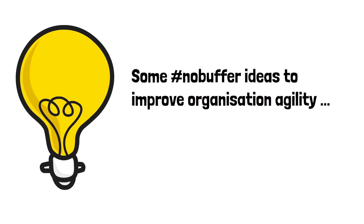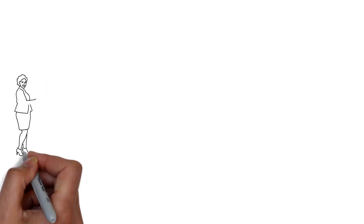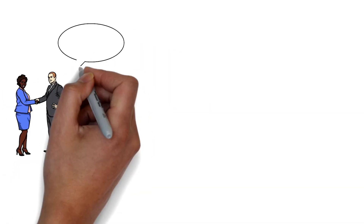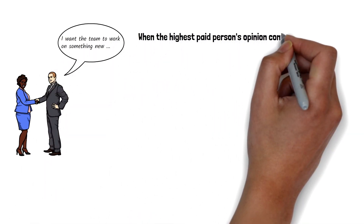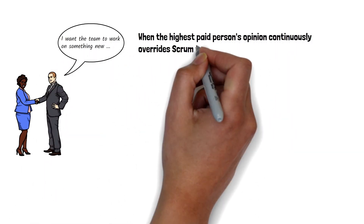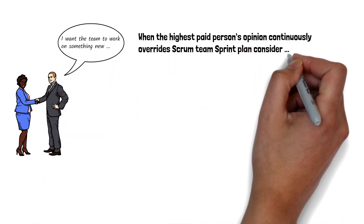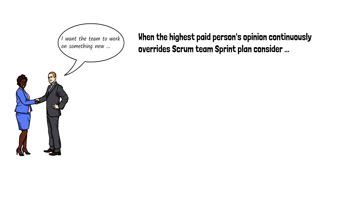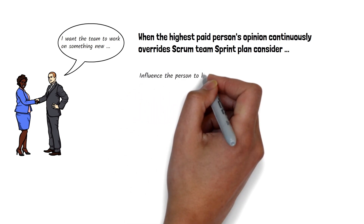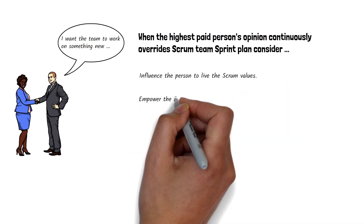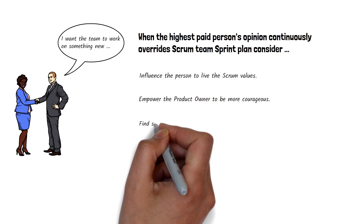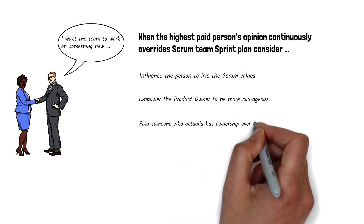Rather than adding buffers that cover up problems, here are some ideas to improve your level of agility. If unplanned work continuously emerges in the middle of the sprint because the highest-paid person's opinion overrides the Scrum team's sprint plan, consider influencing that person to adopt Scrum values, or empower the current product owner, or even find someone who really has ownership over the product to be the product owner.